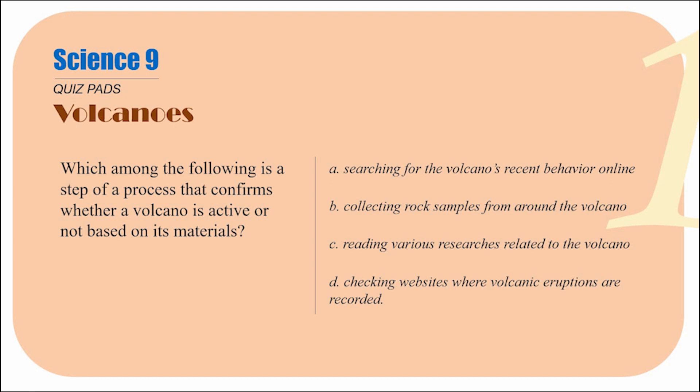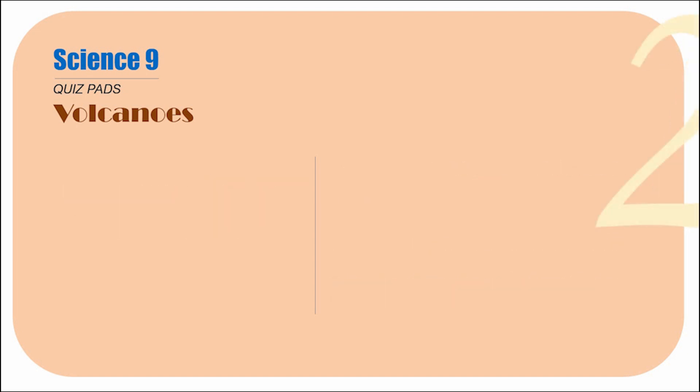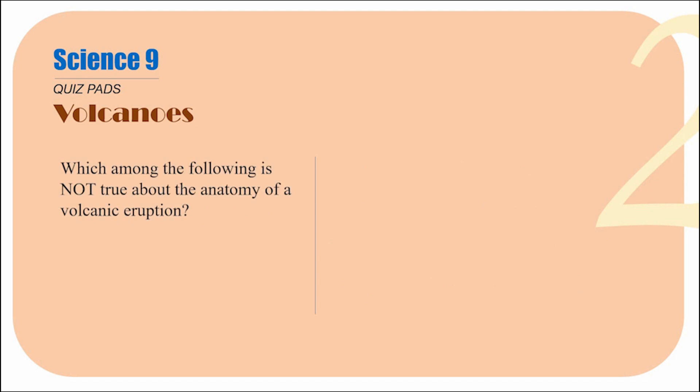Identify which among those steps is related to the procedure of identifying or classifying a volcano based on volcanic materials. Now let's jump to question number two: which among the following is NOT true about the anatomy of a volcanic eruption? Remember that photo of a volcanic eruption we discussed in class — recall how it looks.